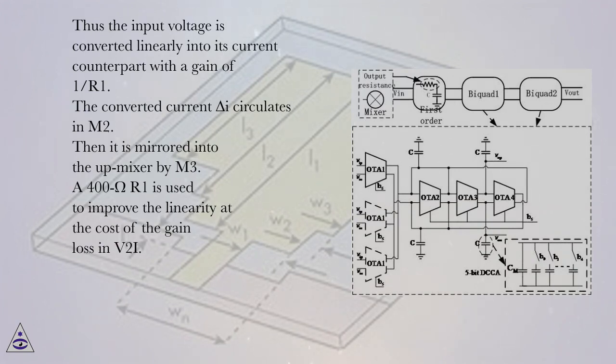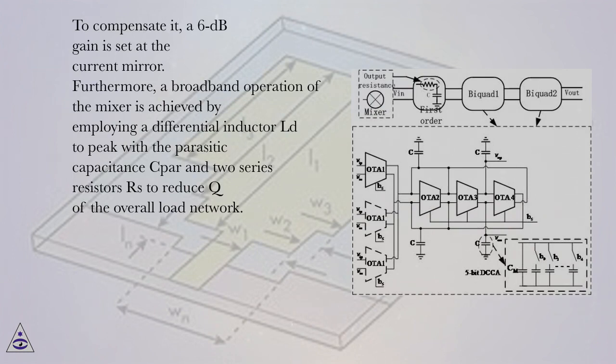Then it is mirrored into the ABB mixer by M3. A 400 ohm R1 is used to improve the linearity at the cost of the gain loss in V2I. To compensate it, a 6 dB gain is set at the current mirror.